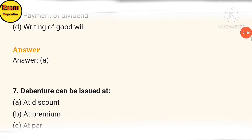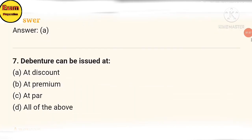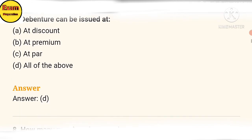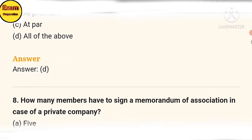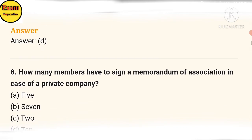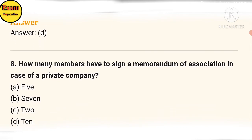Seventh question: debentures can be issued at — (a) discount, (b) premium, (c) par, (d) all of the above. The answer is option D: all of the above. Eighth question: how many members have to sign the memorandum of association in the case of a private company? (a) 5, (b) 7.